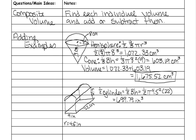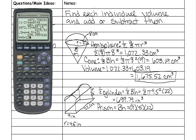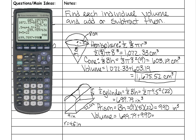Now find the volume of the prism. The formula is the area of the base times the height. Since it's laying on its side, the area of the base is a rectangle: 9 times 5. Then times the height, which is 22. Put that in your calculator and you get 990 cubic inches. Add both volumes together and you get 1,689.79 cubic inches.